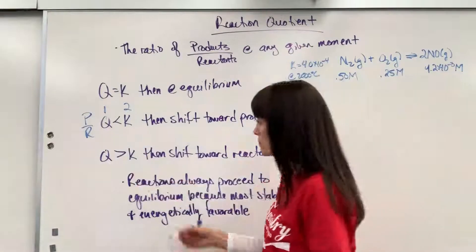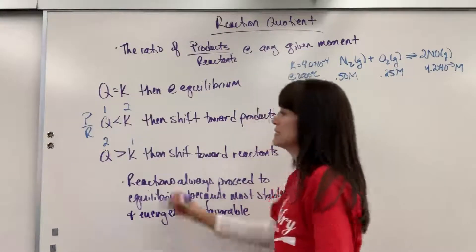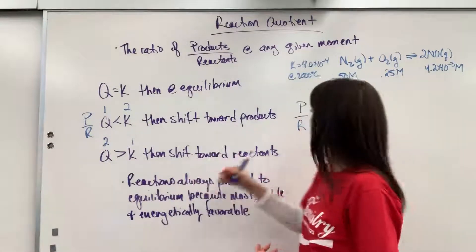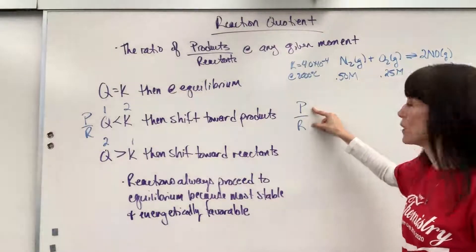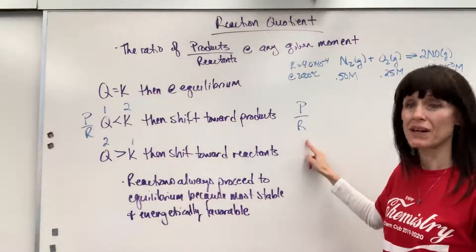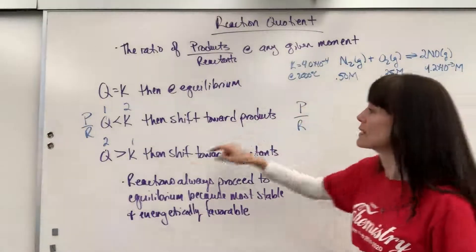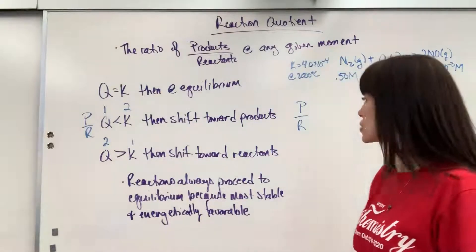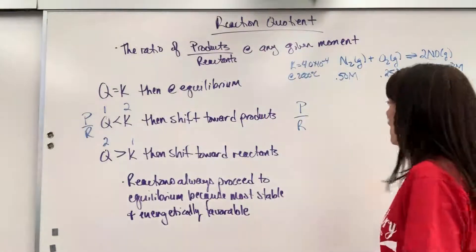Let's use the same example. Let's say Q bigger than K. Q is now two, K is one. So I need Q to get smaller. I need that ratio between the products and the reactants to decrease. So how can I get that ratio smaller? I need a larger denominator. I need bigger reactants. So if this number gets bigger in the denominator, the quotient will get smaller and will reach K, will reach equilibrium, that equilibrium expression. So it's got to shift toward the reactants to get more reactants.